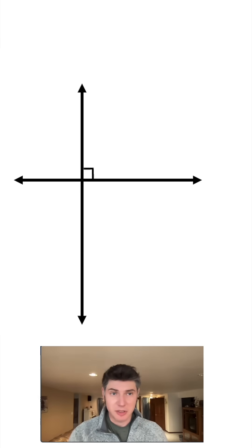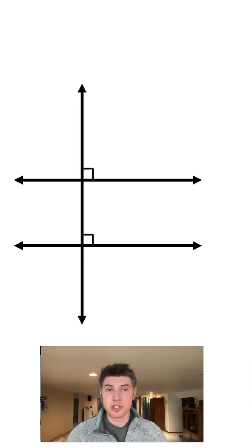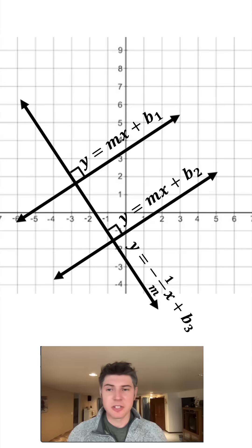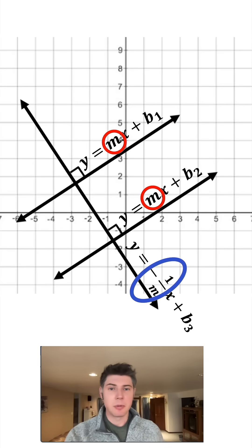If we bring back the coordinate plane, we can give equations to our lines. We notice that parallel lines will have the same slope and perpendicular lines have negative reciprocal slopes.